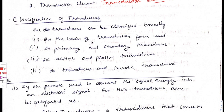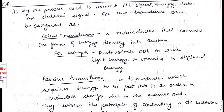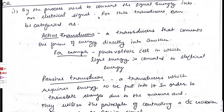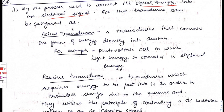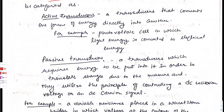Transducers can be classified broadly on the basis of transduction form used, or as primary and secondary transducers, active or passive transducers, or transducers and inverse transducers. By the process used to convert signal energy into electrical signal, transducers can be categorized as active transducers and passive transducers.